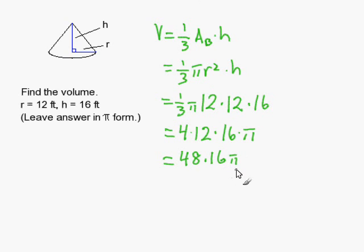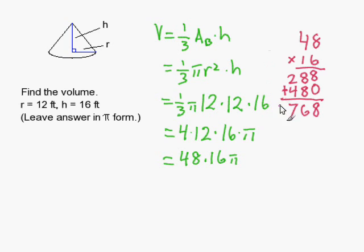And I have 48 times 16 times pi. I didn't memorize this so I'm going to go ahead and multiply it on the side. 48 times 16, this gives me 768. So now my answer is 768 pi.